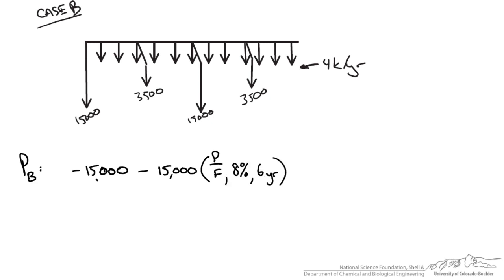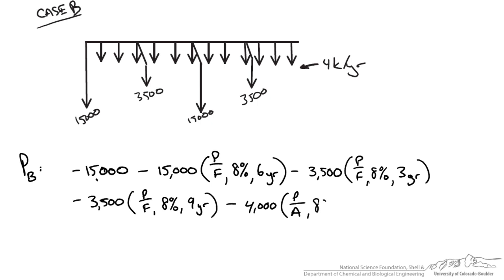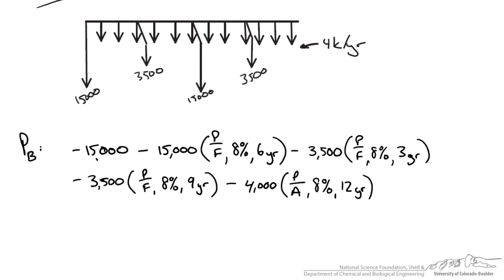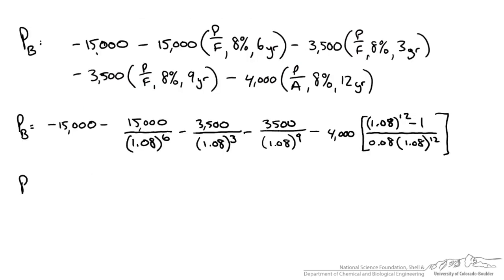We would also be subtracting out our maintenance costs, so that would be $3,500, present-future, 8% year 3, as well as the same thing for year 9. And then we have to account for our maintenance charges, our annual uniform series, and that's going to be our $4,000 present over our annual cost at 8% interest for 12 years. And I get a present cost of reactor B as $59,126.